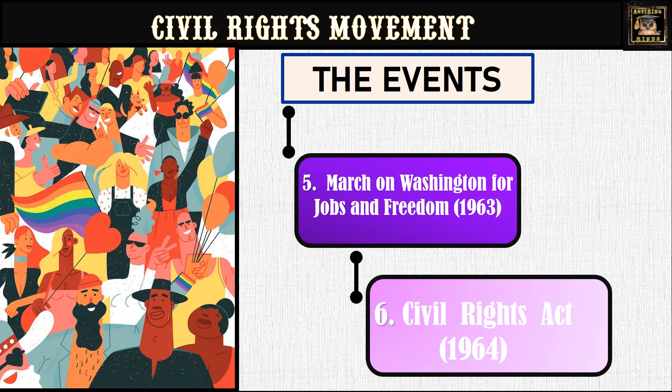Picture a warm August day in 1963, where more than 250,000 people — Black and white, young and old — gathered in Washington, D.C., united by a common cause. This was the March on Washington for Jobs and Freedom, one of the largest political rallies in American history. The march was a call to end racism and demand civil and economic rights for African Americans. What truly made this day unforgettable was Dr. Martin Luther King Jr.'s 'I Have a Dream' speech, whose words painted a vision of a future where people would be judged by the content of their character, not the color of their skin.